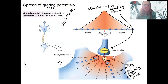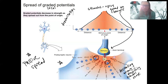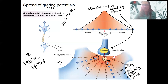It's passive spread — this effect is passive. Nothing is actively transporting it. It's the movement of ions inside of the cell. The stronger the stimulus, the stronger the change, the greater the change in membrane potential, and the greater the area that it travels. So stimulus size matters.